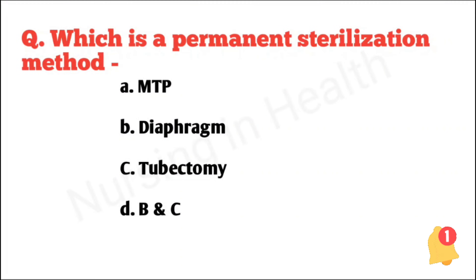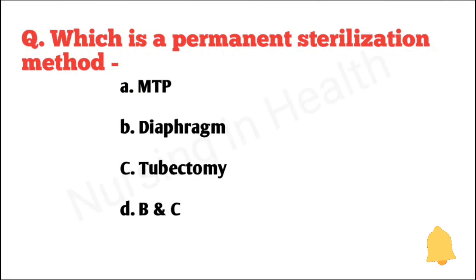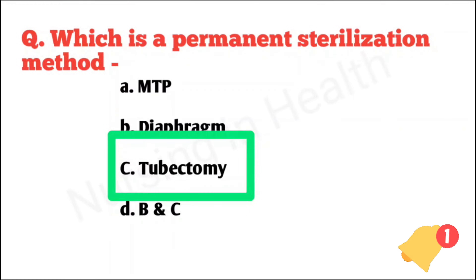Which is a permanent sterilization method? MTP, diaphragm, tubectomy, or B and C. Right answer option C: tubectomy.